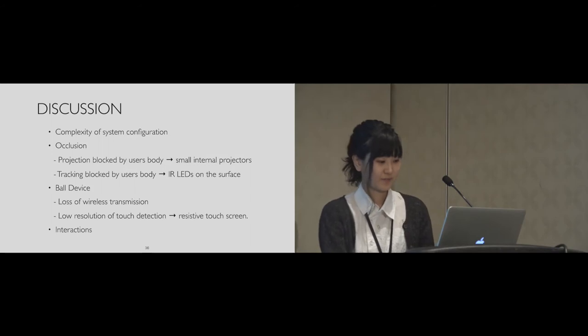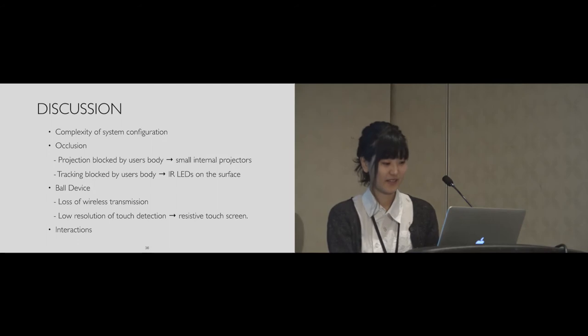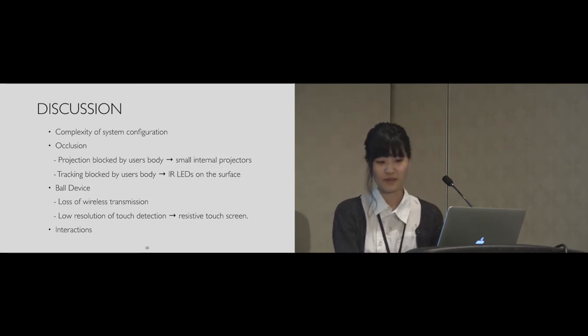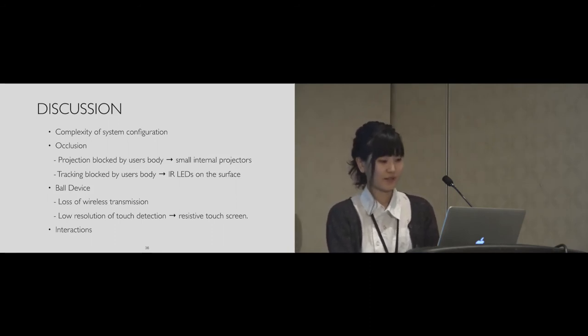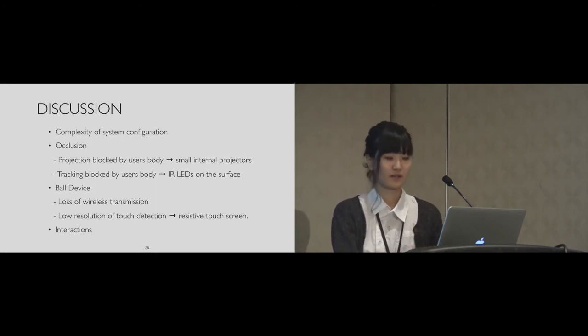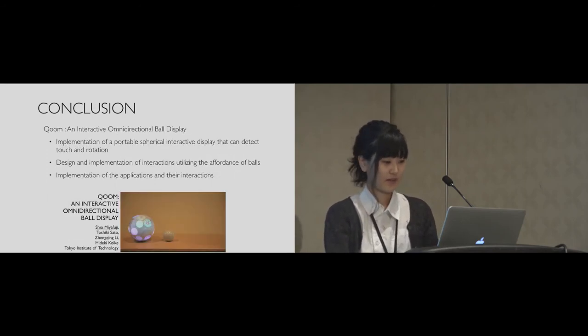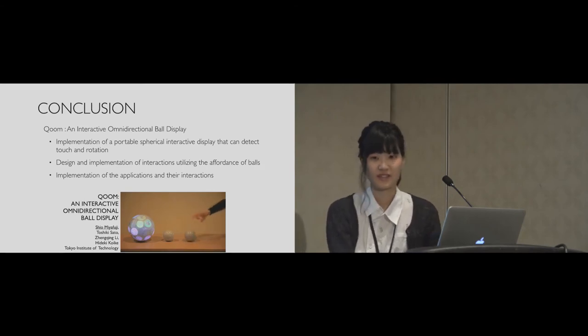Also, in the current implementation, there are problems with the ball device, such as shielding by aluminum panels and the low resolution of touch judgment. For these problems, we will solve them by improving the device, such as using resistance films for touch judgment. And in the current setup, we selected the four primitive interactions based on our observation of how people interact with the ball, but other interactions may be considered depending on applications. Okay, this is the end of my presentation. Thank you very much.